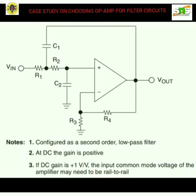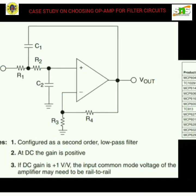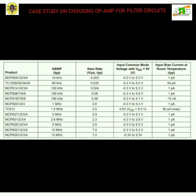Having covered the gain bandwidth product details, the GBWP of Microchip op-amps can be segregated using comparison tables showing how each bandwidth differs. In addition to bandwidth, this table includes GBWP, slew rate, input common mode range, and input bias current at room temperature — all classified for easy comparison.